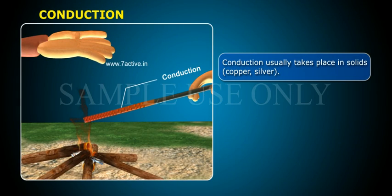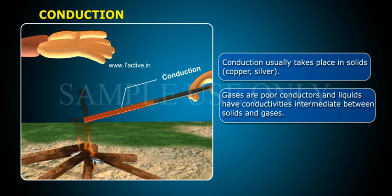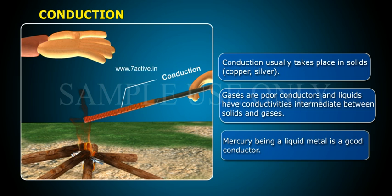Conduction usually takes place in solids, copper, silver. Gases are poor conductors and liquids have conductivities intermediate between solids and gases. Mercury being a liquid metal is a good conductor.